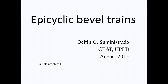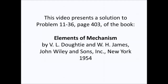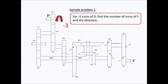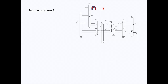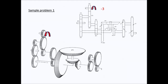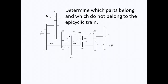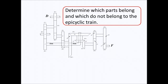In this video I will be explaining the solution to a problem on epicyclic gears. This problem appeared in the book 'Elements of Mechanism' by Doughty and James. Given the rotation of shaft D, we have to find the revolution of shaft F and its direction. As a first step, we have to determine which parts belong and which do not belong to the epicyclic train.